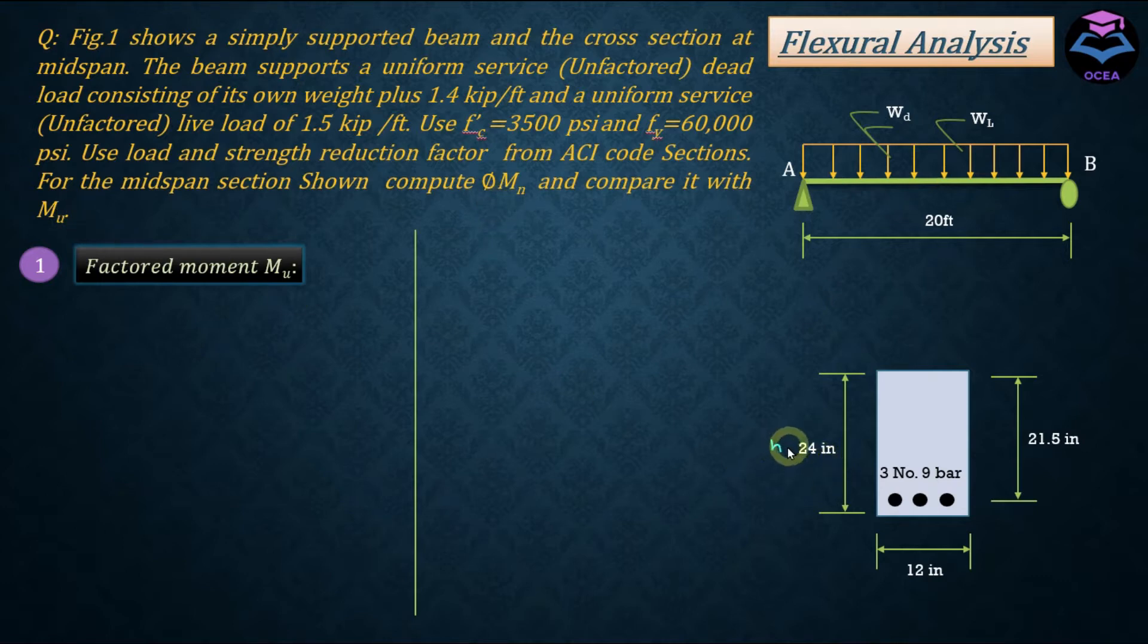In this cross section, this is the height of the section and this is the width of the section represented by B, and this is the effective depth represented by D. This distance is from the extreme compressive fiber to the centroid of steel placed in the tension zone.